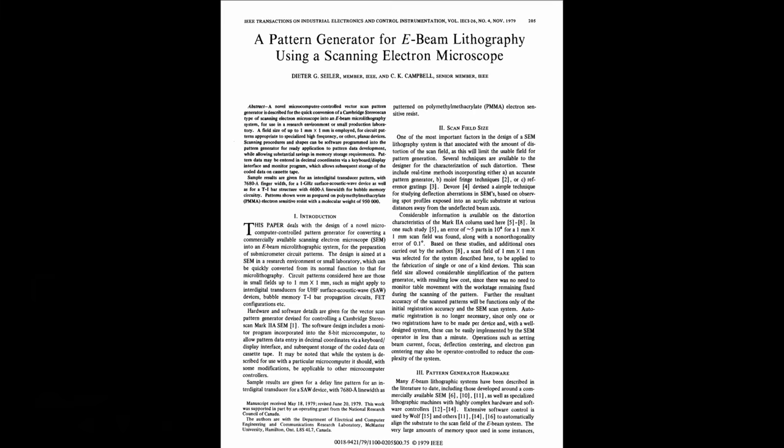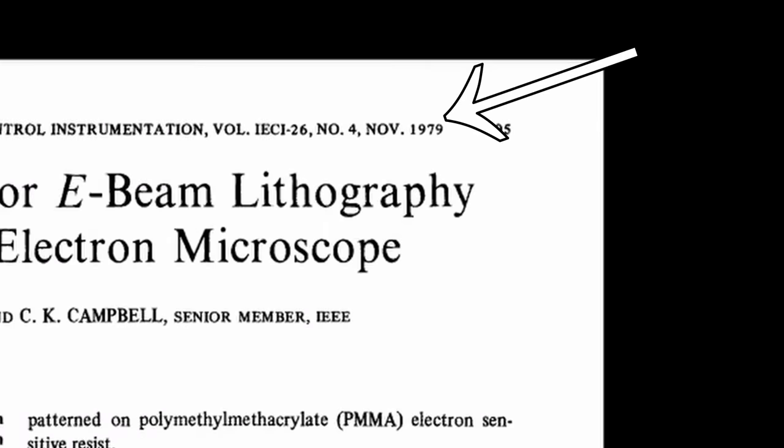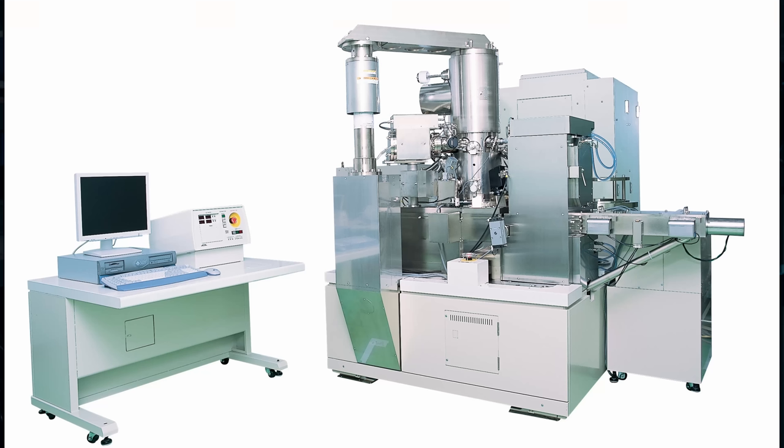I'm using my scanning electron microscope as an improvised electron beam lithography machine — a time-honored tradition. SEMs have been converted into litho machines for basically as long as SEMs have been around. There are some downsides to using an SEM this way, and it's not ideal, although it does get the job done. If you're at a professional institute, you'll probably have a dedicated EBL machine, which offers much better control of the electron beam, higher accelerating voltages, and much better patterns a lot faster.